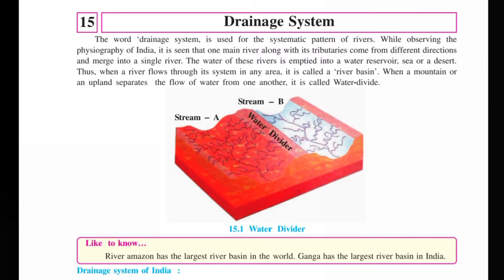Hello guys, today we are learning standard 9 GBSC's lesson number 15: the drainage system. The drainage system is a term generally used for the systematic pattern of a river. The river moves in a very systematic way.